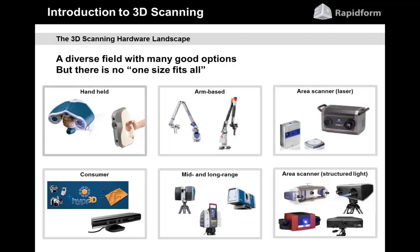Let's go ahead and talk about 3D scanning hardware. The 3D scanning hardware landscape is a very diverse field of all kinds of different devices with a lot of good options. There's no one-size-fits-all when it comes to 3D scanning — no one scanner will do every possible type of job. However, there are scanners that have sweet spots fitting what is typically scanned by a given person or company. I've broken the different types of scanners into six categories here.